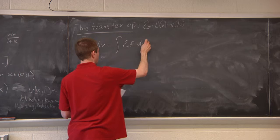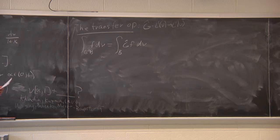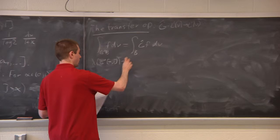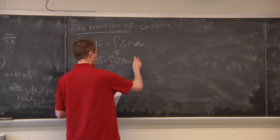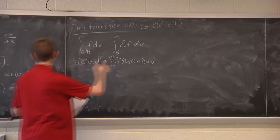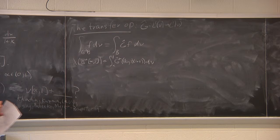The transfer operator Ĝ can be realized as a map from L¹(ν) to L¹(ν). Its defining property is: if you integrate on a set B, integrating over G⁻¹(B) of a function F dν, that equals integrating Ĝ(F) dν over just the regular set B. So the Lebesgue measure of G⁻ᴺ([α,1]) equals the integral from α to 1 of Ĝᴺ applied to (log 2 · (1+x)) dν.